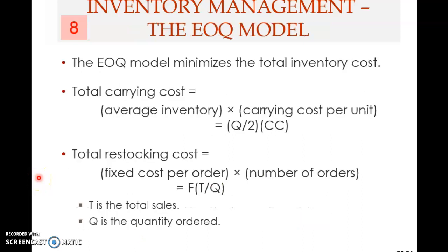Then we come to the EOQ model — the Economic Order Quantity. This is a quantitative model of inventory management, in contrast to the ABC approach which is more qualitative. The EOQ model tries to determine the optimal order quantity.